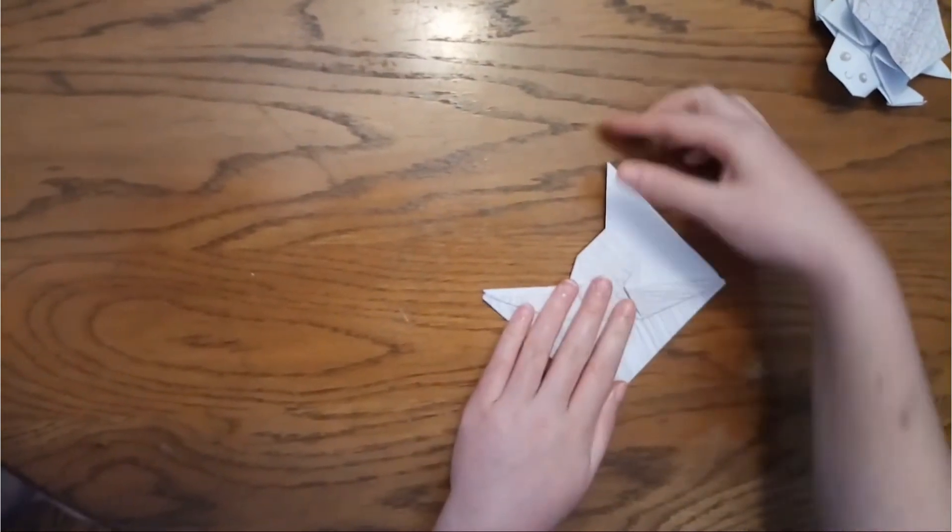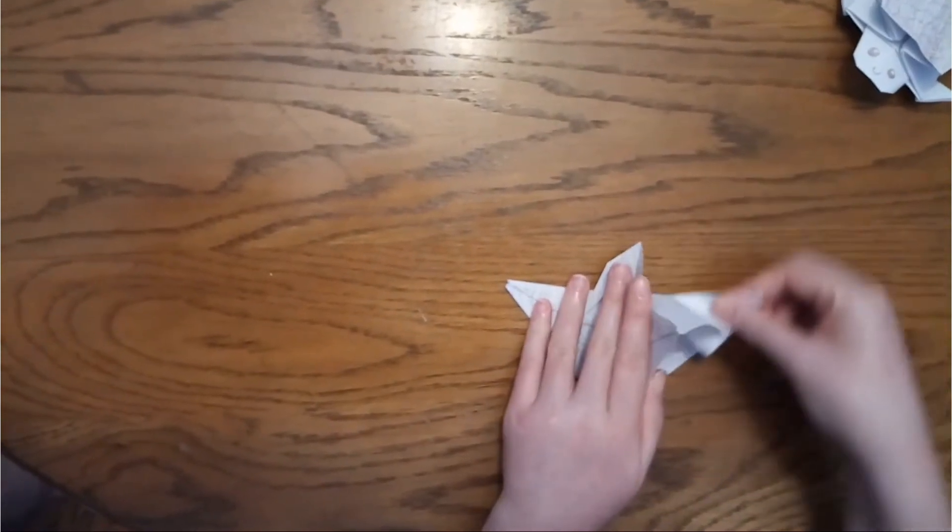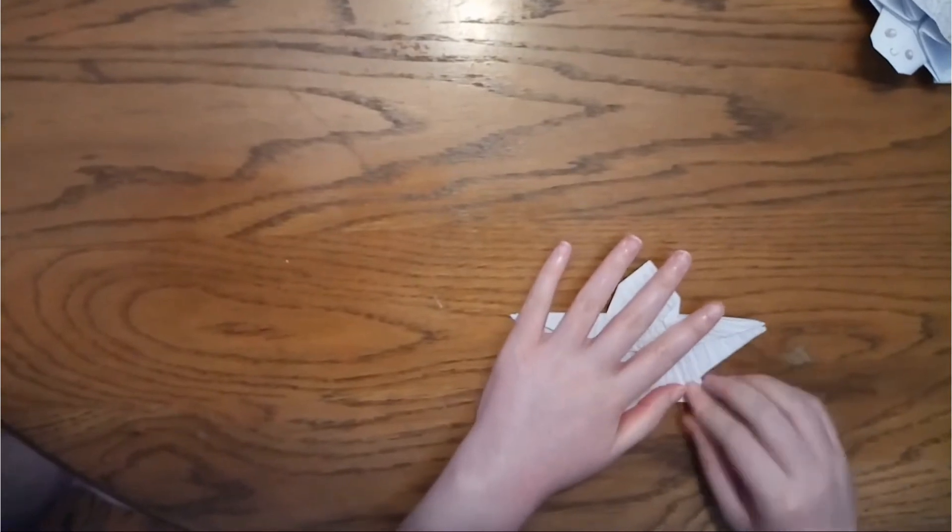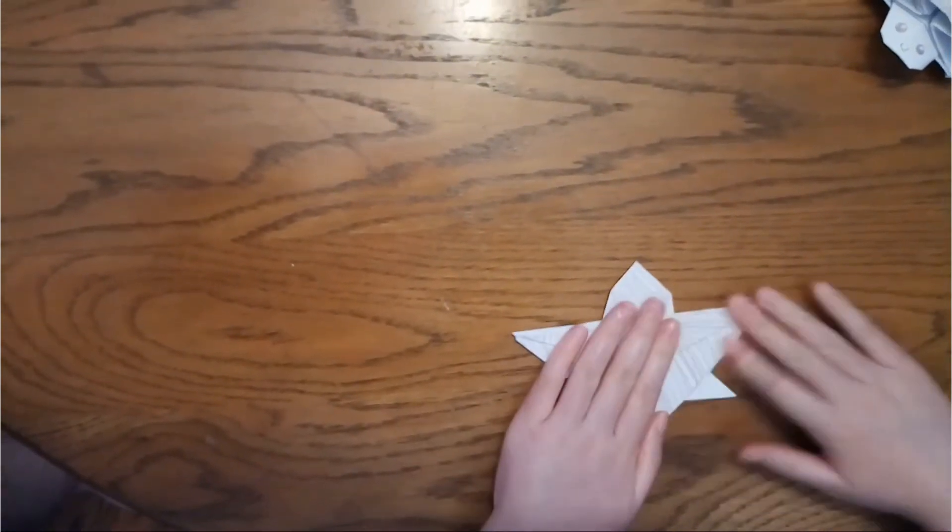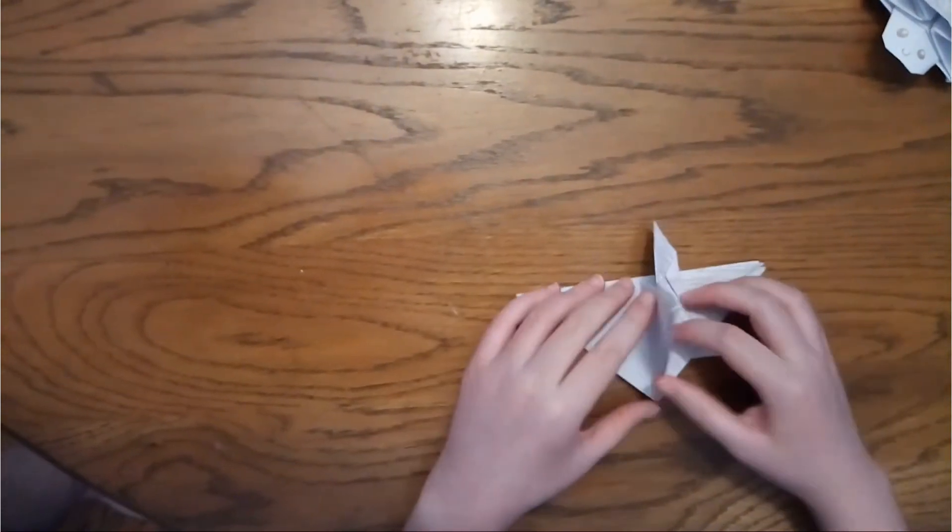So the next part is going to be taking this side flap here on the inside and opening that up. Flatten it again. You're going to want to pinch this. Don't let go of it. And then bring it back down in here. And this is going to be one of the feet of the tortoise. And then just flatten it out once you've pulled it down.